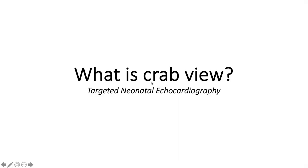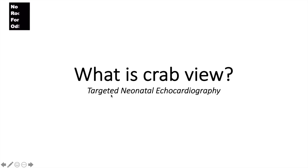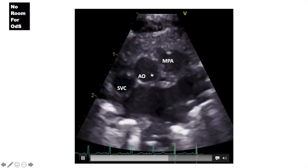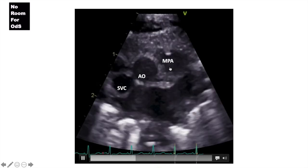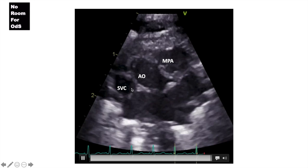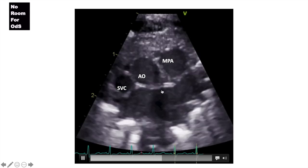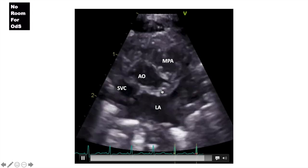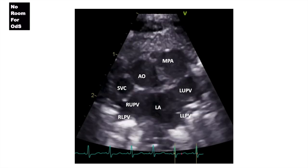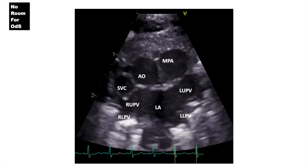Today I'm going to show you the crab view, which is an important view that we get as part of the TNE protocol. You can see that you're right here in the middle between the pulmonary artery and the superior vena cava. At the bottom is the left atrium, and you can see the four pulmonary veins draining into the LA.